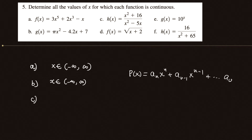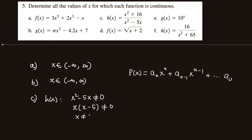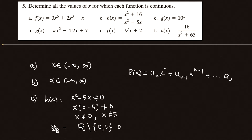Part C has a rational function — it's a fraction. That means the function h(x) is continuous on every number except the numbers that cause the denominator to be 0. So x² minus 5x cannot be 0, meaning x(x − 5) cannot be 0. The function is continuous on any number except 0 and 5, or written as intervals: (−∞, 0) ∪ (0, 5) ∪ (5, ∞).